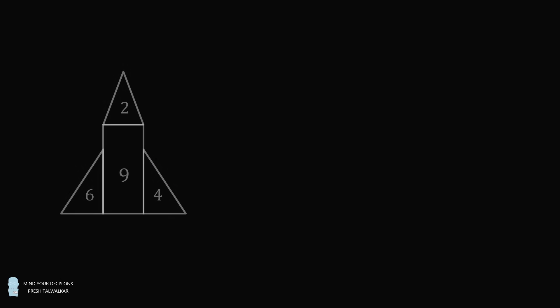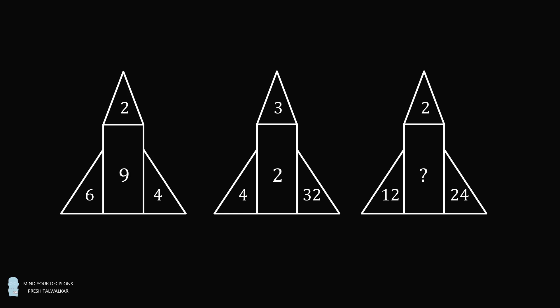So here is the puzzle. We have four numbers arranged in a rocket ship. The two fins are 6 and 4, the nose is 2, and the main body says 9. We have another four numbers. The two fins are 4, 32, the nose is 3, and the main body is 2. In a third rocket ship, the fins are 12 and 24, the nose is 2, and the main body is a question mark.